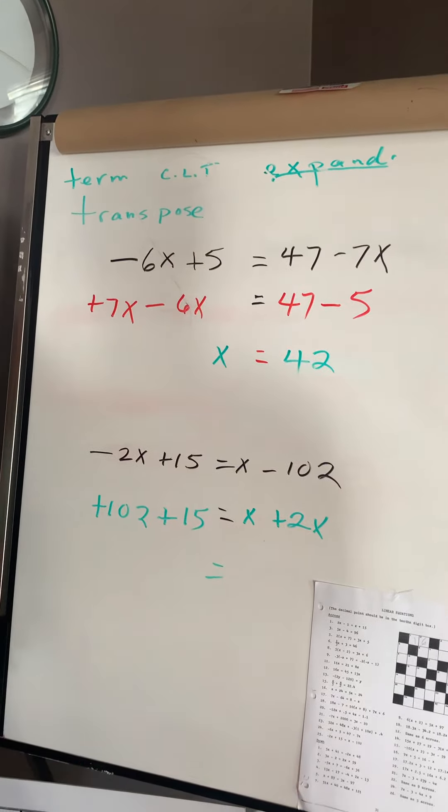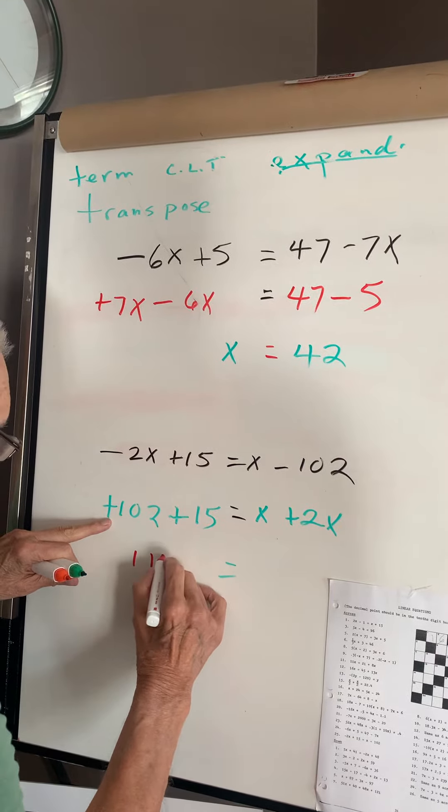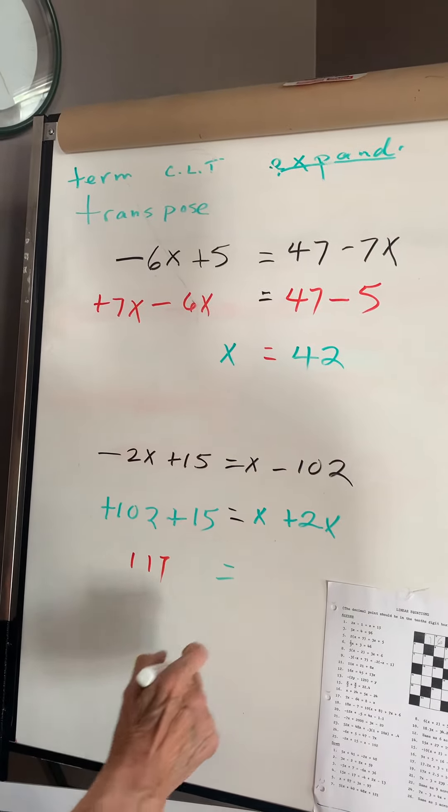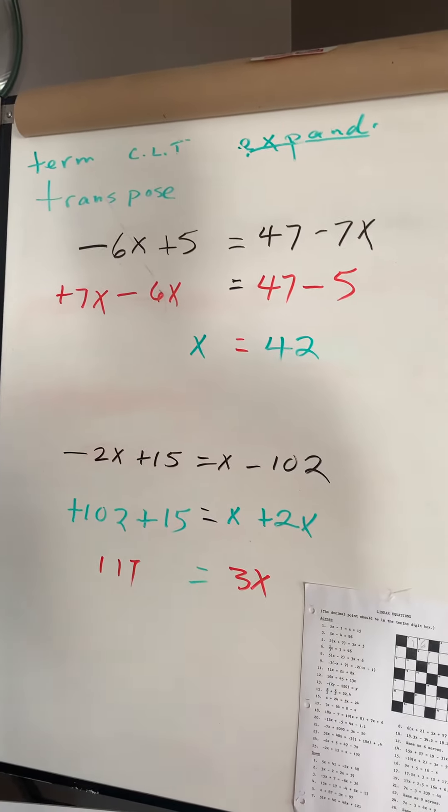Now this will be 1, 1, 7. And this is 3x. And I better pick up the 7 over here.